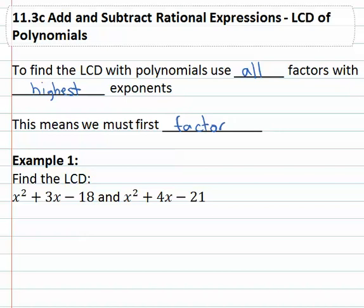We have x squared plus 3x minus 18 and x squared plus 4x minus 21. To find the least common denominator, we need to first factor.